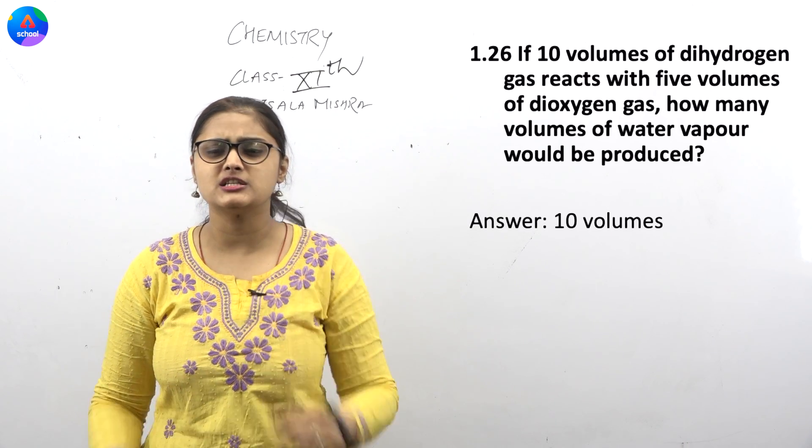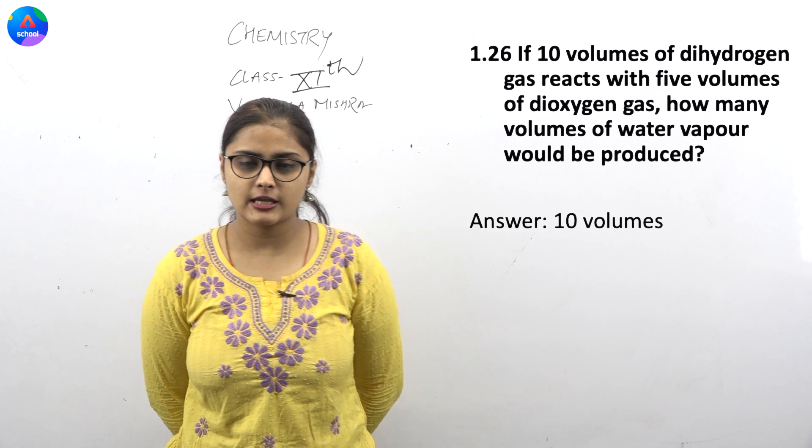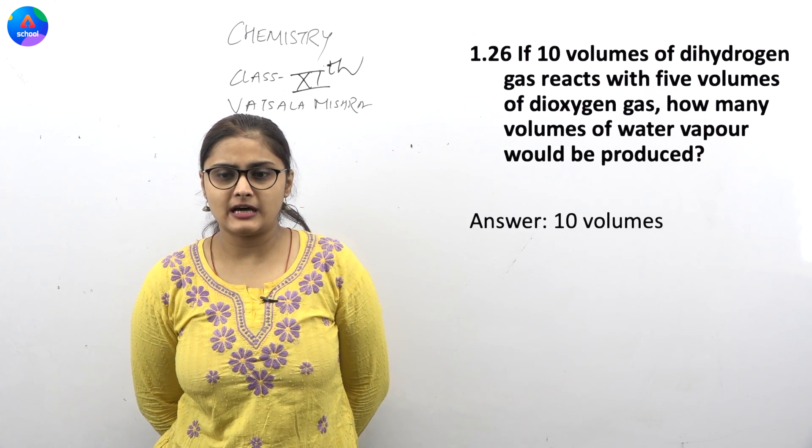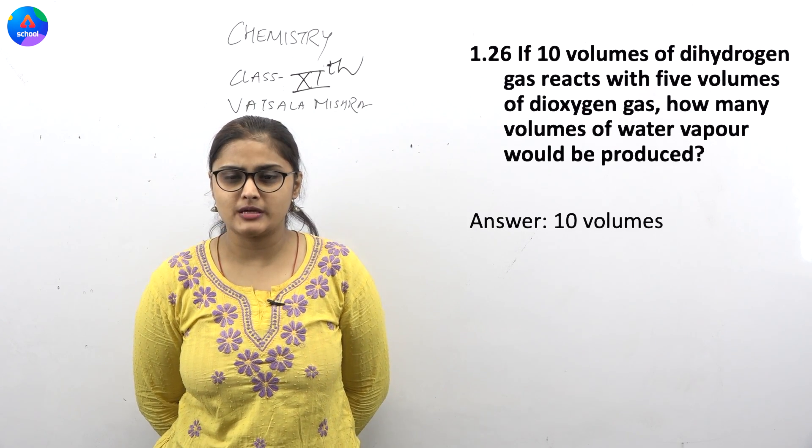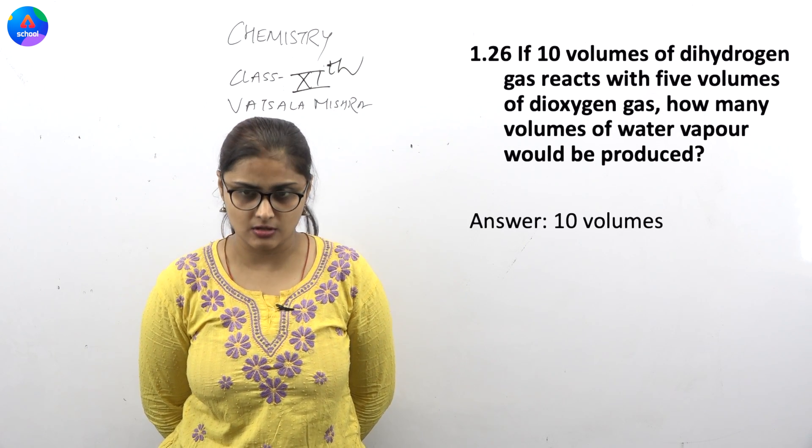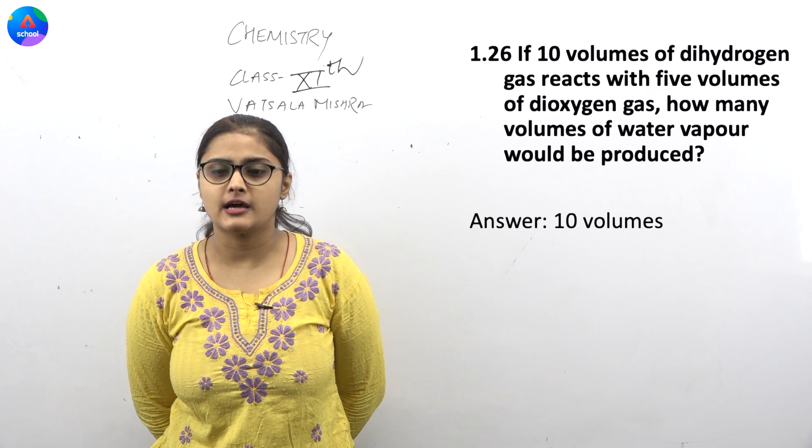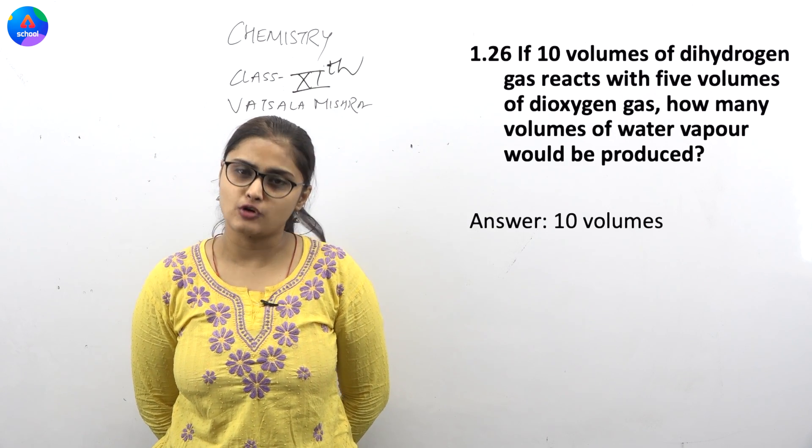Question 1.26 is a very easy question. It asks: If 10 volumes of dihydrogen gas reacts with 5 volumes of dioxygen gas, how many volumes of water vapor will be produced?